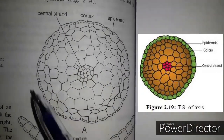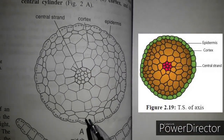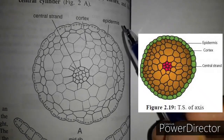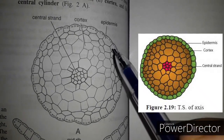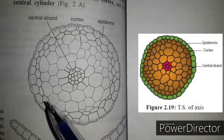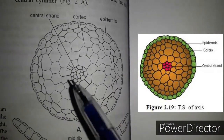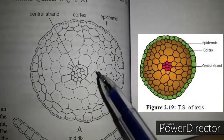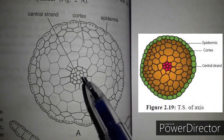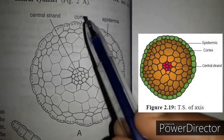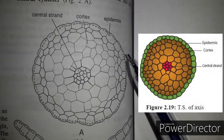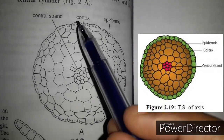This is the transverse section of the stem of Funeria. It consists of three different regions: the outer epidermis with chlorophyllous cells without stomata or pores, next to it a parenchymatous cortex composed of thin-walled cells, and the central portion occupied by a central cylinder composed of dead cells that lack protoplasm and help in conduction of water and nutrients.